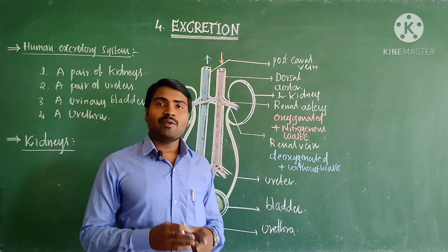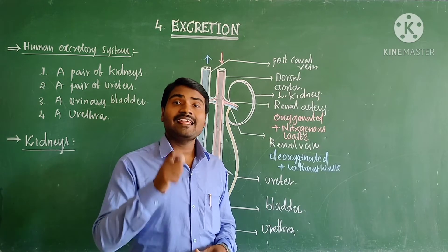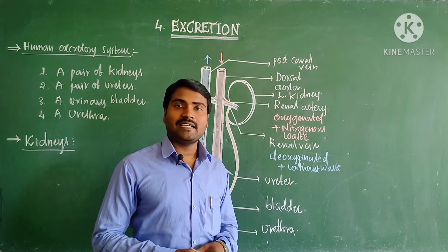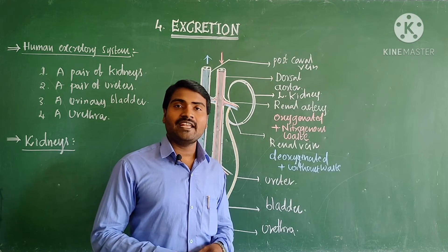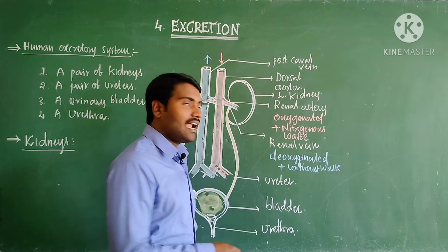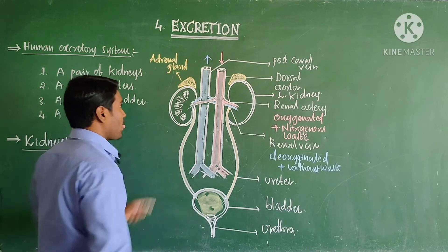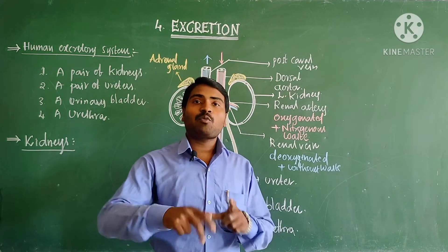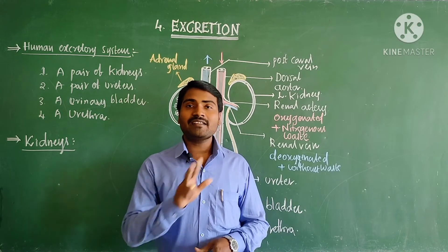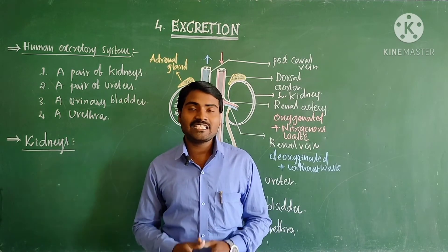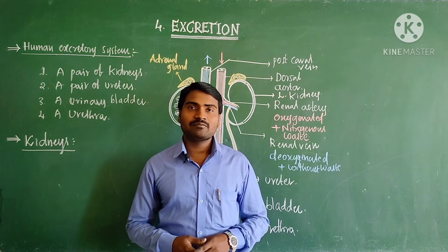One more point to remember: above the kidney there is an endocrine gland called the adrenal gland. The glands present above the kidneys are called adrenal glands, but they are not part of the excretory system — they are parts of the endocrine system.